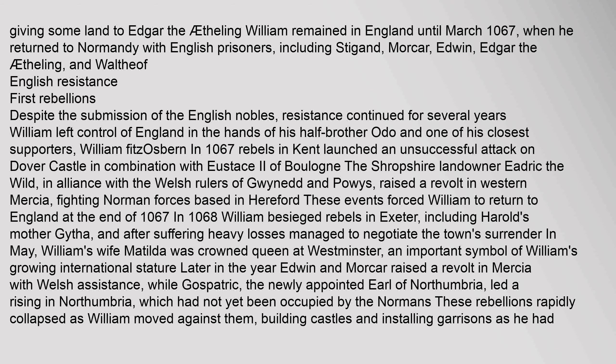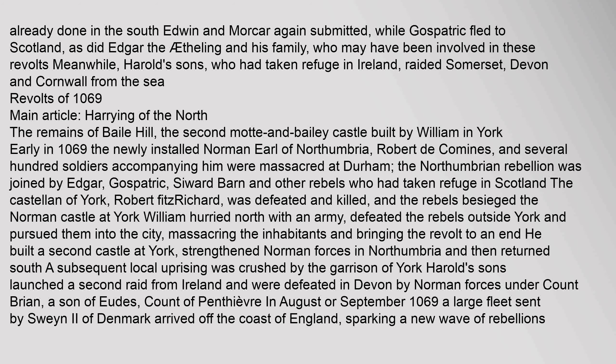After suffering heavy losses, William managed to negotiate the town's surrender in May. William's wife Matilda was crowned Queen at Westminster, an important symbol of William's growing international stature. Later in the year, Edwin and Morcar raised a revolt in Mercia with Welsh assistance, while Gospatric, the newly appointed Earl of Northumbria, led a rising in Northumbria, which had not yet been occupied by the Normans. As these rebellions rapidly collapsed as William moved against them, building castles and installing garrisons, Edwin and Morcar again submitted, while Gospatric fled to Scotland, as did Edgar the Aetheling and his family. Meanwhile, Harold's sons, who had taken refuge in Ireland, raided Somerset, Devon and Cornwall from the sea.